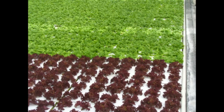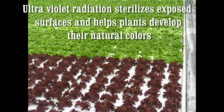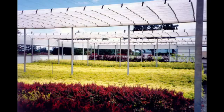Retracting the roof also exposes the plant surfaces to ultraviolet radiation, which sterilizes exposed surfaces and helps plants develop their natural colors, particularly red and yellow.